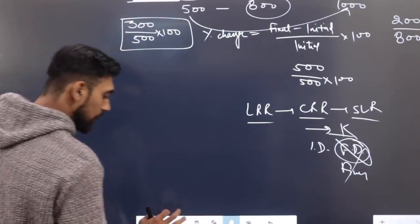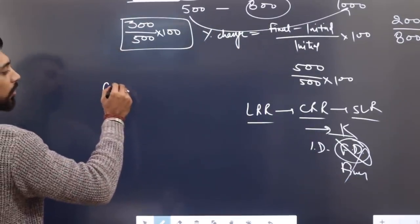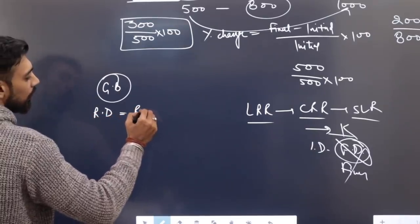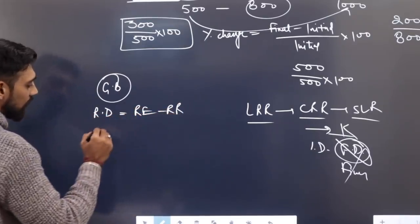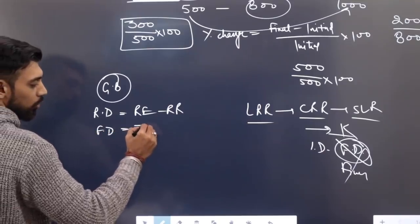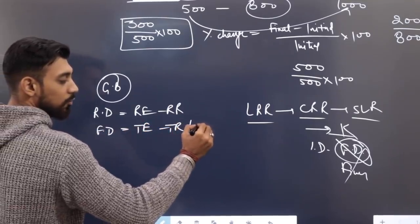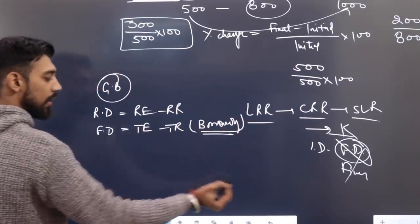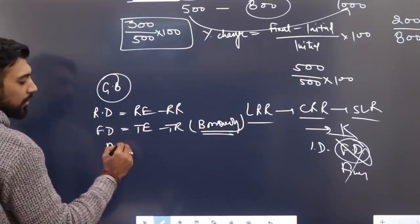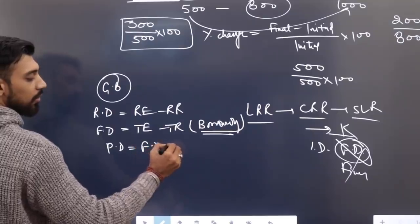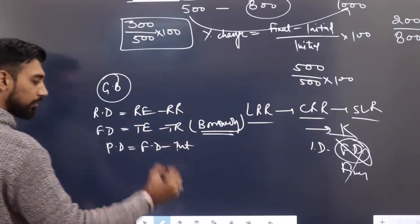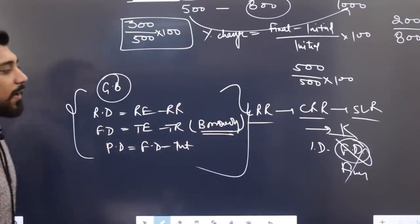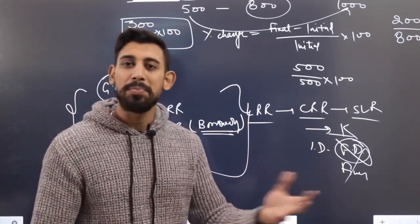For government budget numericals, please revise: Revenue Deficit = Revenue Expenditure minus Revenue Receipts. Fiscal Deficit = Total Expenditure minus Total Receipts excluding borrowings (net of borrowings). Primary Deficit = Fiscal Deficit minus Interest Payments. All these formulas you must know very well.